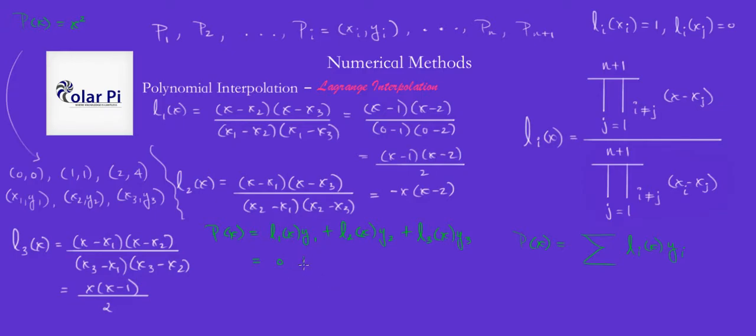So, 0 plus L2, we already figured out, is right here. So, negative X times X minus 2, that's L2. And then we need to multiply by Y2, which is 1. So, that's that. I won't bother writing times 1.